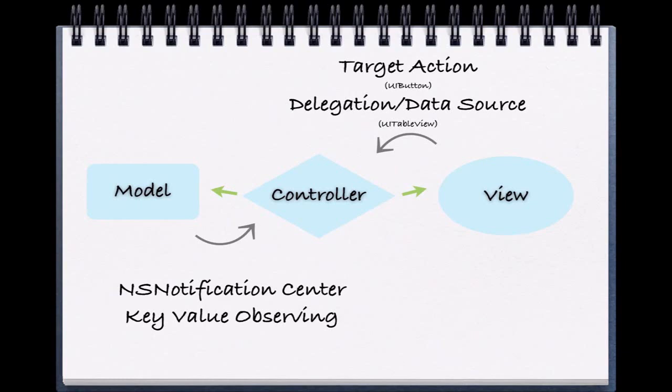Now let's move over to our model. Our model speaks to the view controller in a blind sort of manner known as notification center and key value observing. These are more advanced topics so don't worry about them for now. The big takeaway is that our models never drive our view controller. Though they can alert our view controller that the data has changed, they should remain blissfully unaware of what's going on inside of the view controller. Our model objects or our data never ever communicate directly with our views.